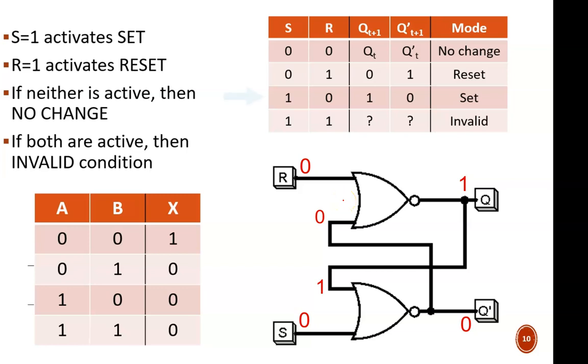Now let's enter set mode. The function table shows us that Q should then equal one, which actually is the current state. Let's see if that happens. With S equal to one, the bottom NOR gate inputs are one and one, so its output is zero. Q' remains at zero. This top NOR gate still has inputs of zero and zero, so its output doesn't change, and we remain with Q equal to one.